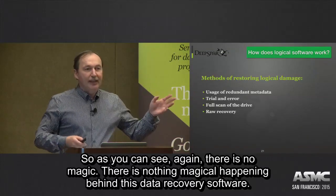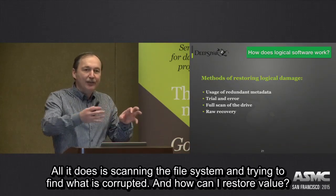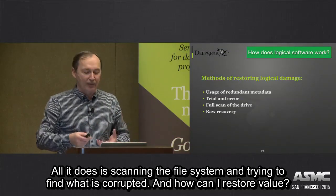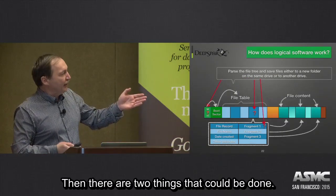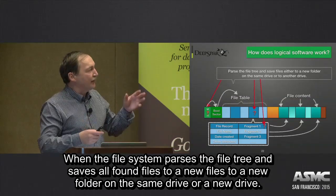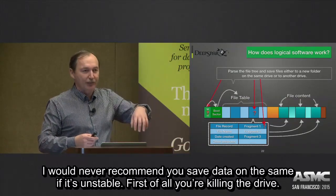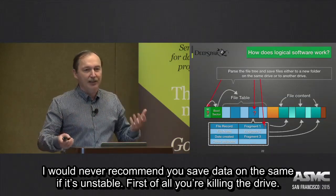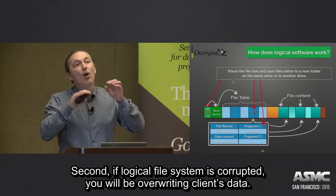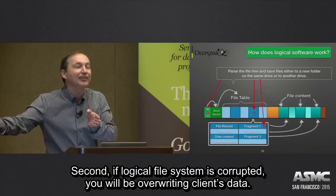There is no magic happening behind data recovery software. All it does is scan the file system, find what is corrupted, and figure out how to restore the original value. There are two ways the software can proceed: it either saves all found files to a new folder on a safe drive or to another drive. I would never recommend saving data on the same drive if it's unstable — you risk killing the drive, and because the file system is corrupted, the OS doesn't know exactly where empty space is, so you could overwrite the client's data.